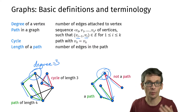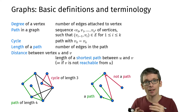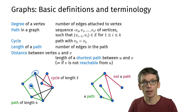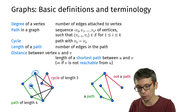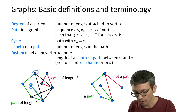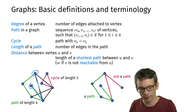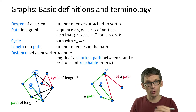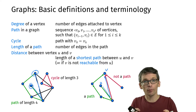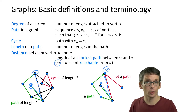Another notion is the distance between vertices, which is the length of the shortest path. For instance, if I take these two vertices, the distance is 2 — there is a path of length 4 but also a shorter path of length 2 connecting them. In the directed graph, if this is u and that is v, the distance from u to v is 2, while the distance from v to u is infinity because from v I cannot reach u.